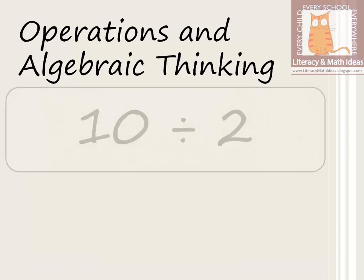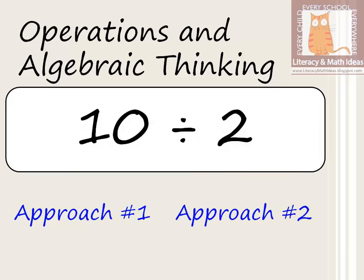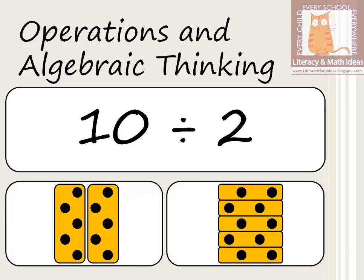When you see a division problem, which question should you ask? Take 10 divided by 2. Should you ask how many items are in each group when 10 is divided into two equal groups — the first approach — or should you ask how many groups of two items exist within the 10 items? In both cases the answer is 5: either two groups with 5 items each, or five groups with 2 items each.